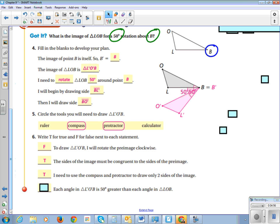Each angle in triangle L prime, O prime, B is 50 degrees greater. That is false, because all the angles need to have the same measure as the original one.